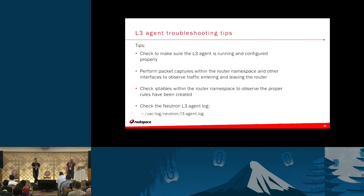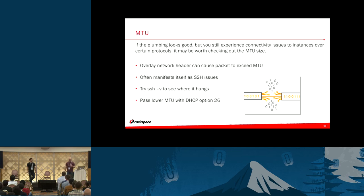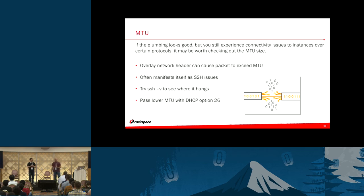A couple of things to be aware of when running overlay networks like VXLAN or GRE: if you're running the default Ethernet MTU of 1500 on your physical switch ports, and you use an overlay like VXLAN, the headers added to each packet can cause you to exceed the MTU and that traffic to be silently dropped. This typically manifests as issues connecting to instances via SSH — you'll have the handshake but then it just hangs. What you can do is update your subnet to pass DHCP option 26, drop the MTU to about 1450, and reboot the instance — that will more than likely fix it. An alternative to lowering the MTU on your instance is enabling jumbo frames on the VTEP interfaces of each host and your switch ports.